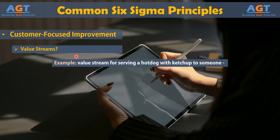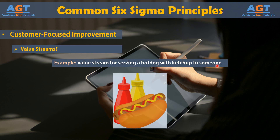For example, the value stream for serving a hot dog with ketchup to someone would include a hot dog supplier, a bun supplier, a ketchup supplier, hot dogs, buns, ketchup, a cooking procedure for the hot dog, a pot, tongs, someone to do the cooking, a plate, someone to put the hot dog into the bun, someone to put the ketchup on the hot dog, someone to put the hot dog onto a plate, and someone to serve the hot dog to another. If you combine all of the above processes into a pictorial representation of exactly how these elements become the served hot dog, then you have a value stream map.